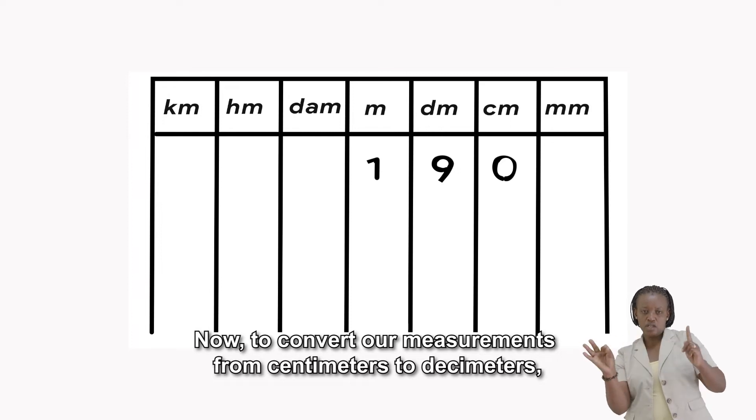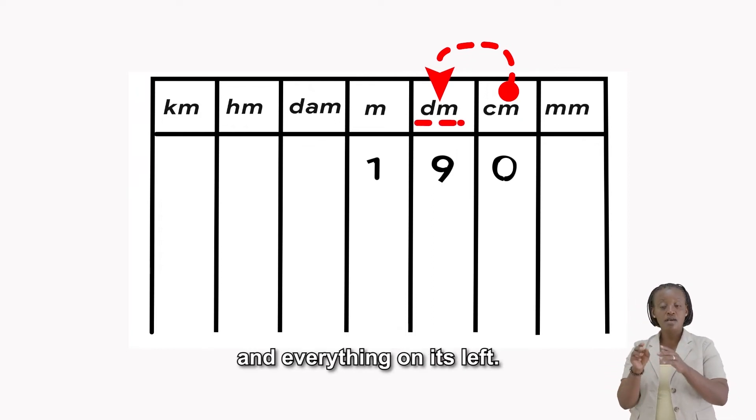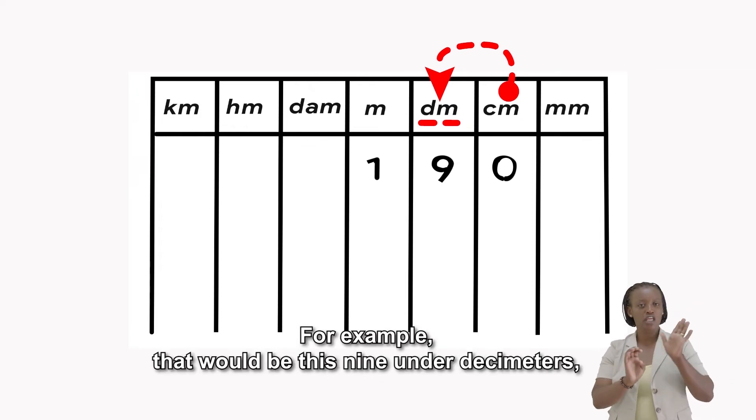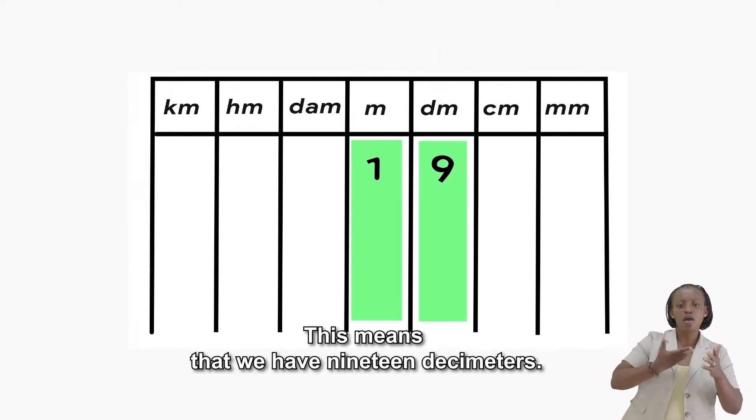Now, to convert our measurement from centimeters to decimeters, we consider the number under decimeters and everything on its left. For example, that will be this 9 under decimeters and this one that is on its left. This means that we have 19 decimeters.